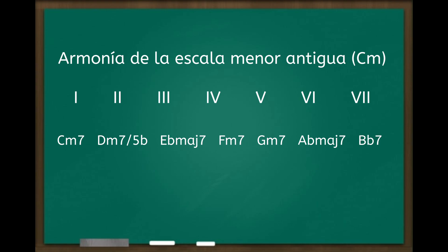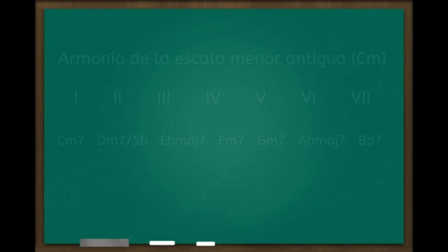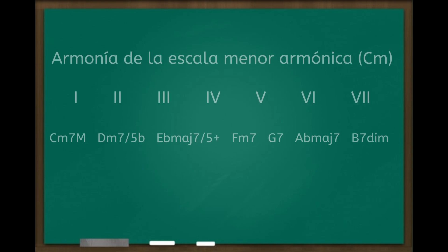Vamos a la armonía que genera la escala menor armónica de do menor. En el primer grado: do menor séptima mayor. En el segundo grado: re semi disminuido. En el tercer grado: mi bemol séptima mayor con quinta aumentada. En el cuarto grado: fa menor séptima. En el quinto grado: sol séptima. En el sexto grado: la bemol séptima mayor. Y en el séptimo grado: un acorde de si con séptima disminuida.